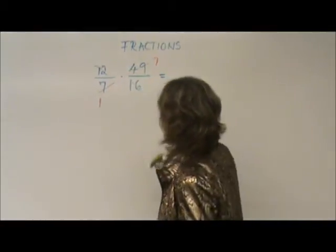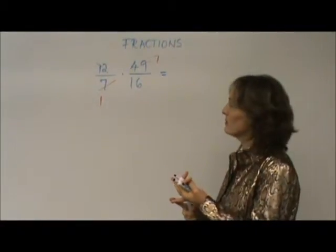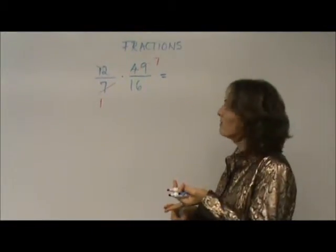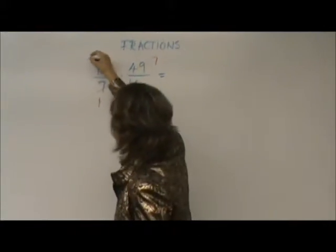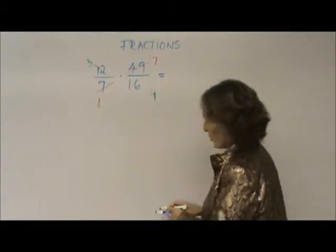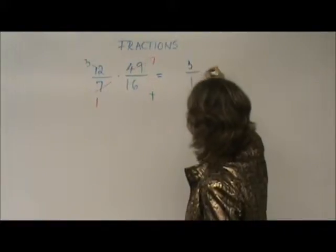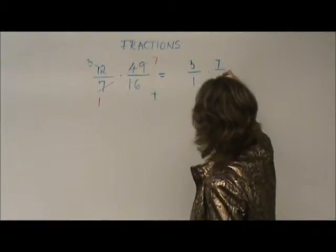12 and 16, they have a common factor as well. 2 is one of them, but it's not the best. What about 4? Yes. 12 divided by 4 is 3. 16 divided by 4 is 4. Now, 1 is left. I have 3 divided by 1 times 7 divided by 4.